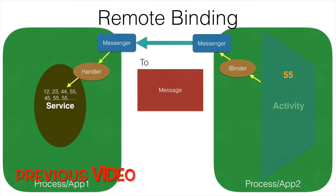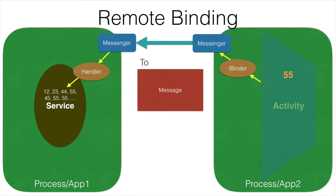Hi guys, CodeTutor here and my name is Anil Deshpande. We ended the previous video on the note that with this code we have implemented the first part of the implementation where our activity can connect to the service. The remaining part is the service responding back with the random number, and the activity receiving it and displaying it back to the UI.